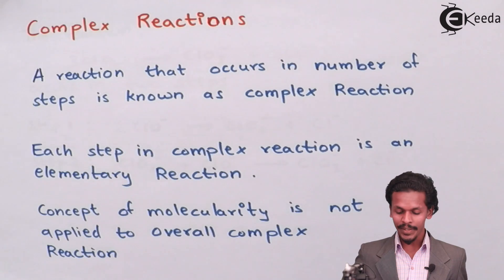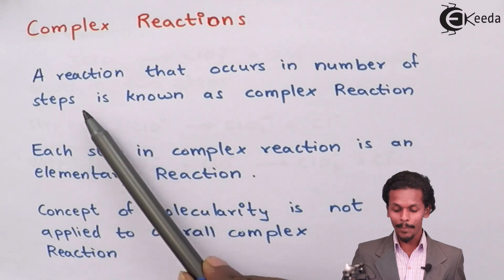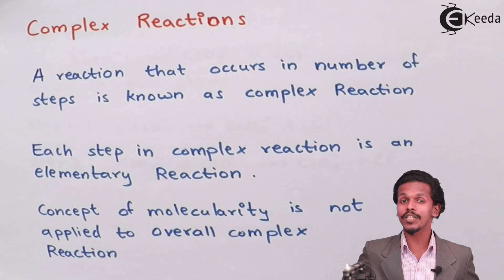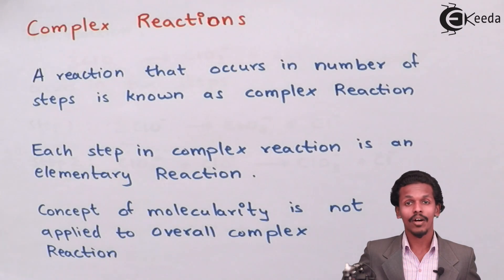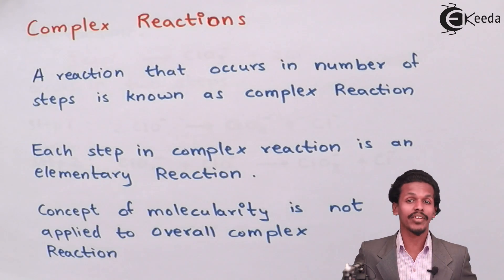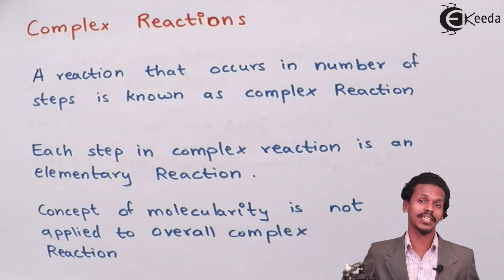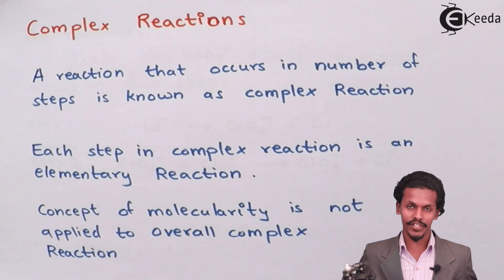A complex reaction is nothing but a reaction that occurs in number of steps. In the last lecture we have studied what is molecularity of a reaction or what is element reaction. Elemental reactions are those which are following only a single step but this is complex reaction which can take multiple steps.